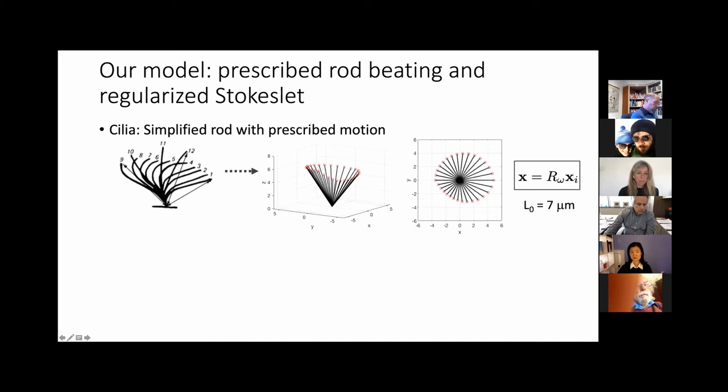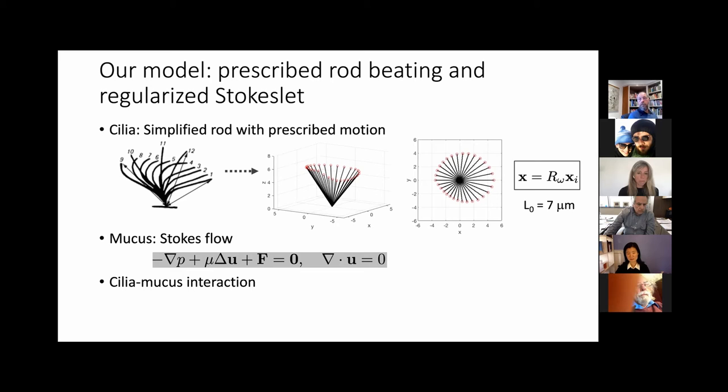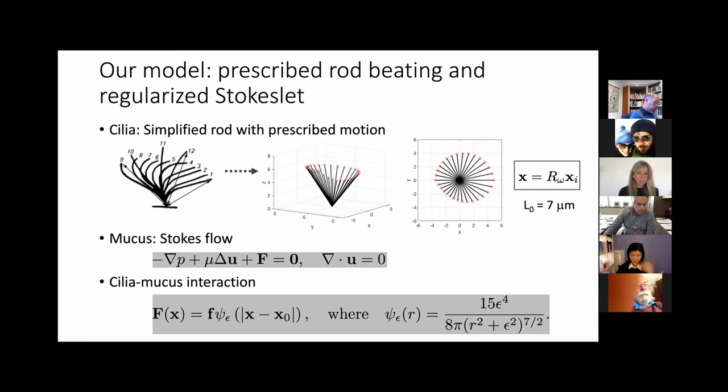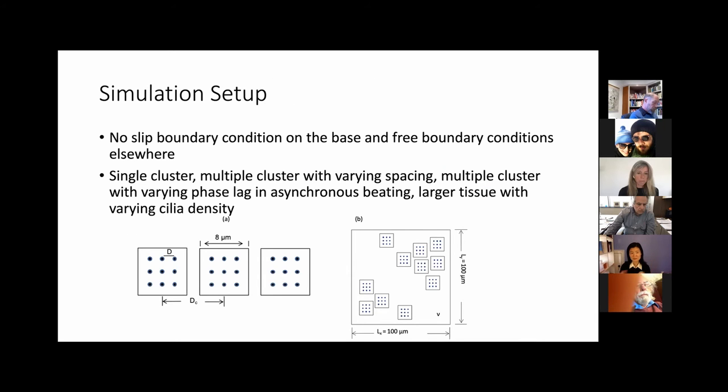Our model is really to simplify the cilia into simple rods. So it's a rod with different heights rotating. In this projection on the top view, you can see that this is asymmetric, not just left and right, but also top and down. We prescribe its motion rotating at 18 Hertz. The maximum length is seven microns. The mucus is a simple fluid that follows Stokes flow. The interaction between mucus and cilia is through that force using a regularized Stokeslet method.